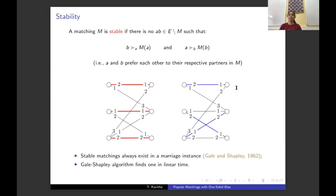We seek a good matching and the usual notion of optimality is stability. A matching is stable if there is no edge that blocks it. An edge AB blocks matching M if both A and B prefer each other to their respective assignments in M. For instance, the red matching is stable since no edge blocks it, but the blue matching is not stable since the edge between the two middle vertices blocks it. It is a classical result of Gale and Shapley that stable matchings always exist and their algorithm finds one in linear time.